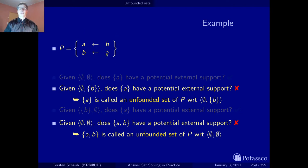What we want to characterize are the cases where we detect that atoms should be assigned false. The concept we will introduce is that of an unfounded set. Both of these cases are unfounded sets, but with respect to a particular partial interpretation. Whether a set is unfounded depends on the partial assignment we are currently looking at — though {A, B} is actually an unfounded set regardless of which partial assignment we consider in this example.